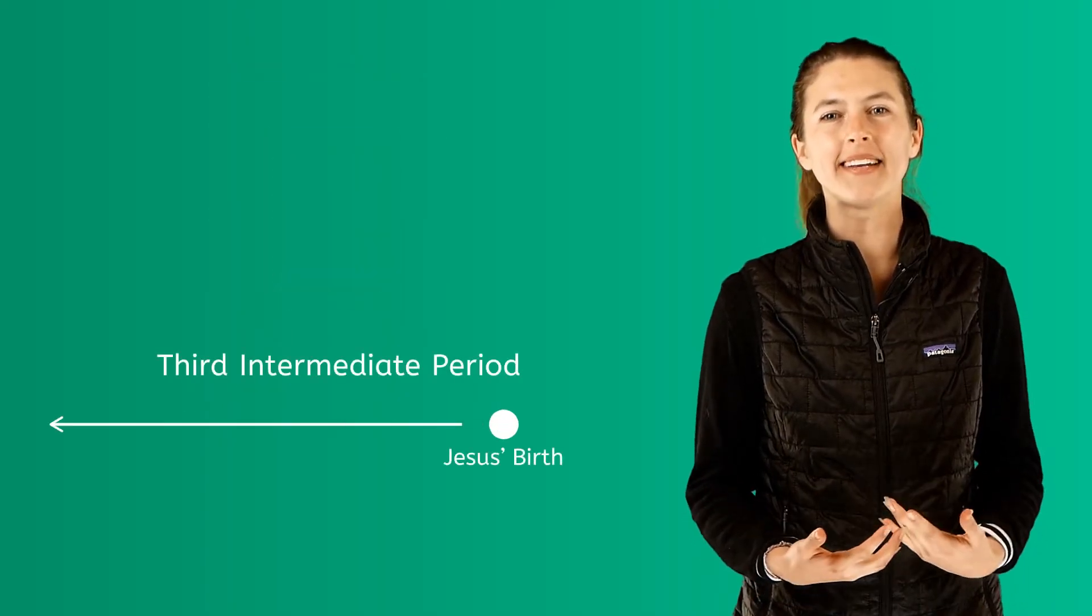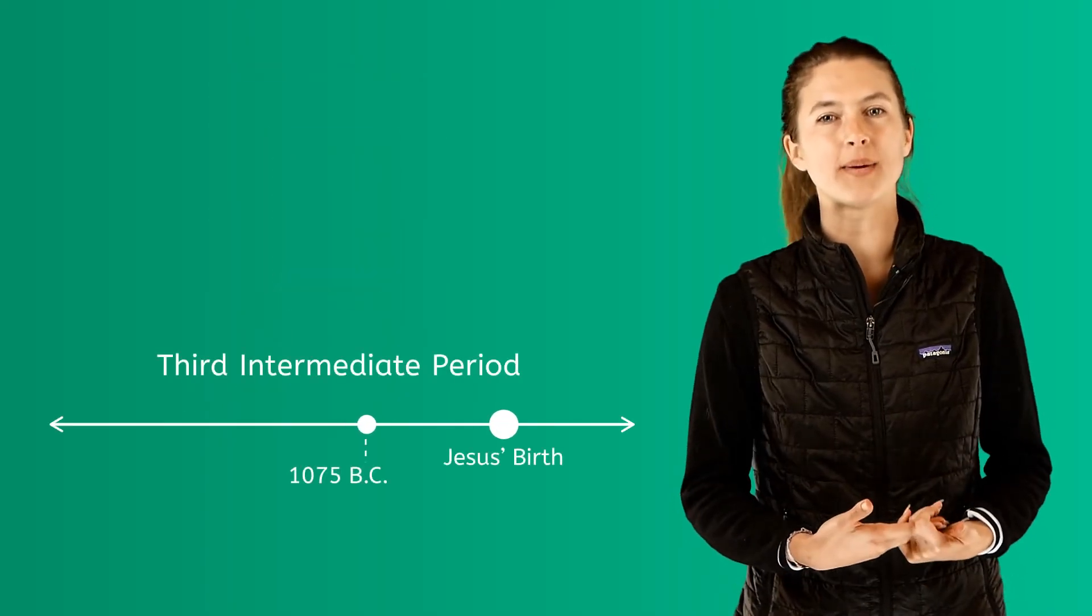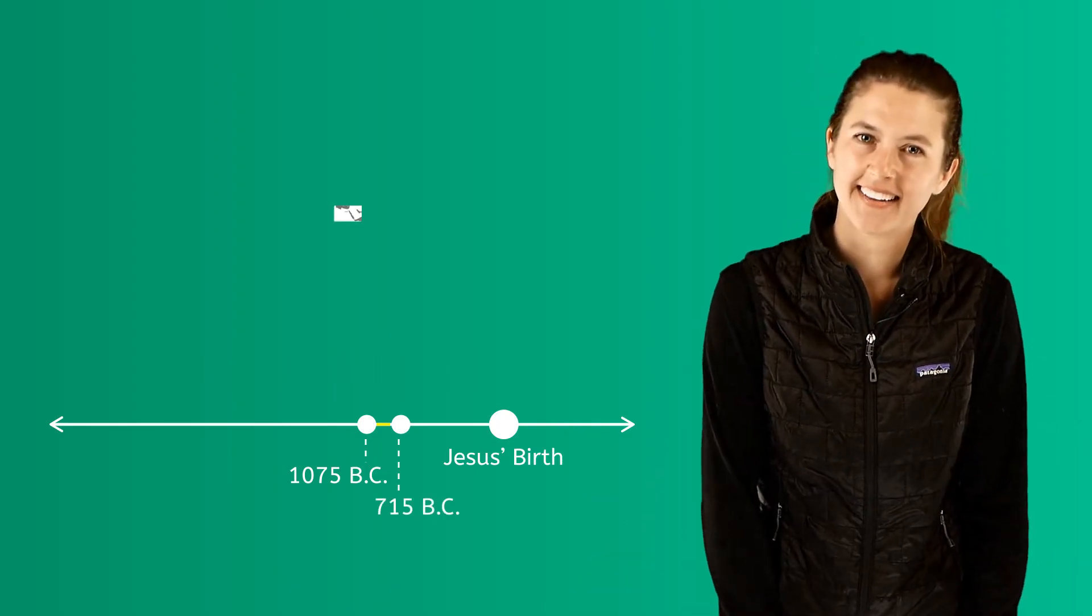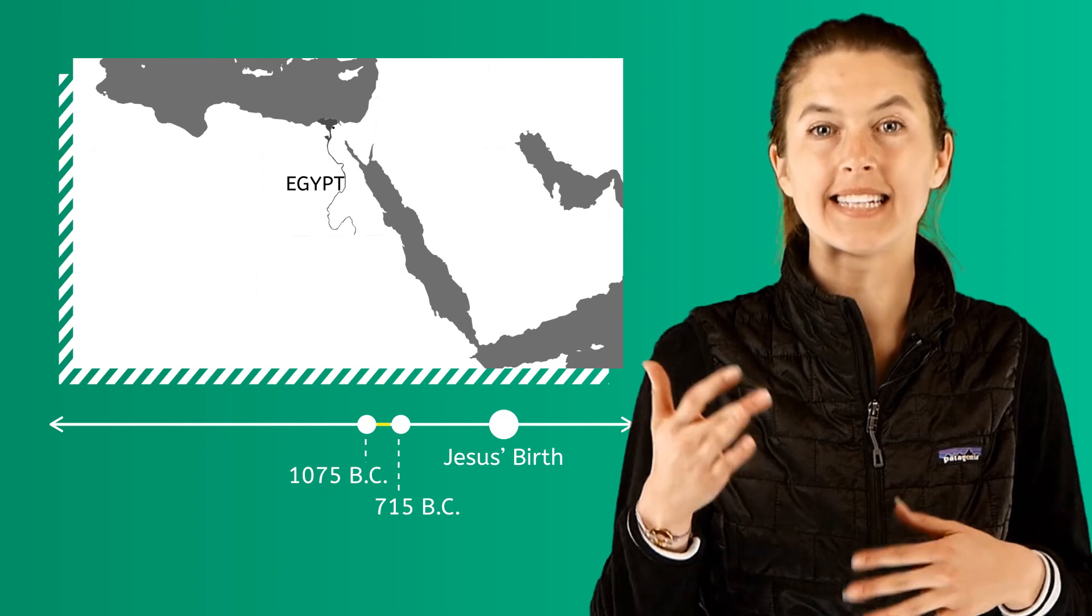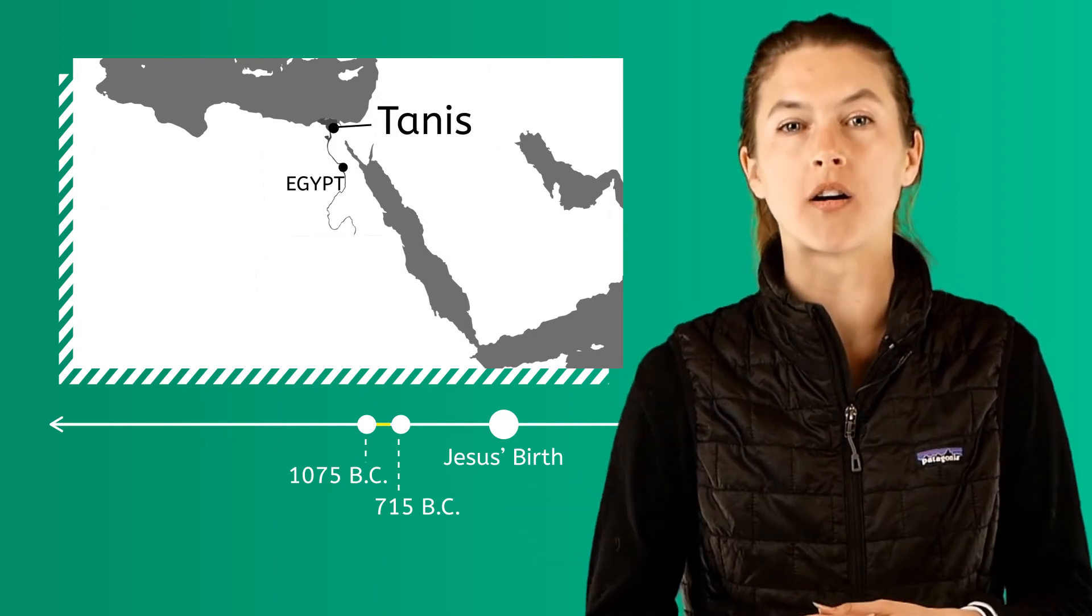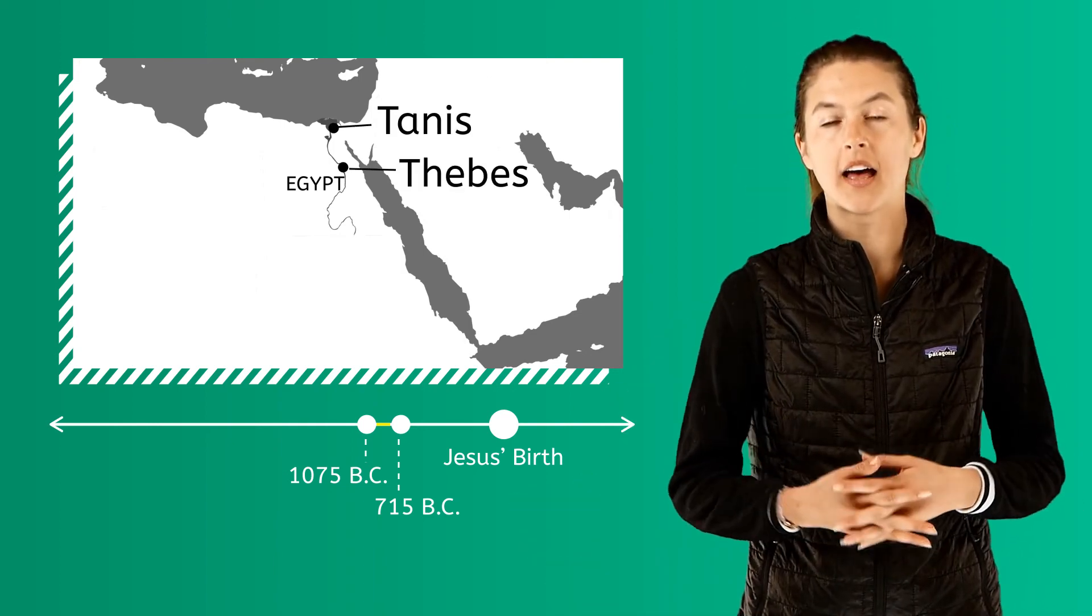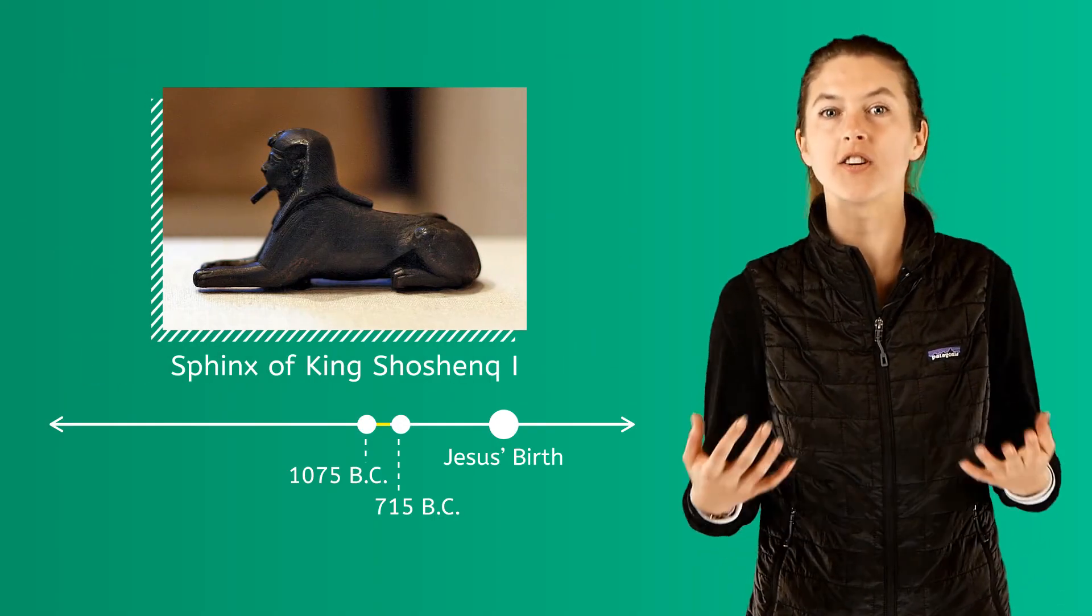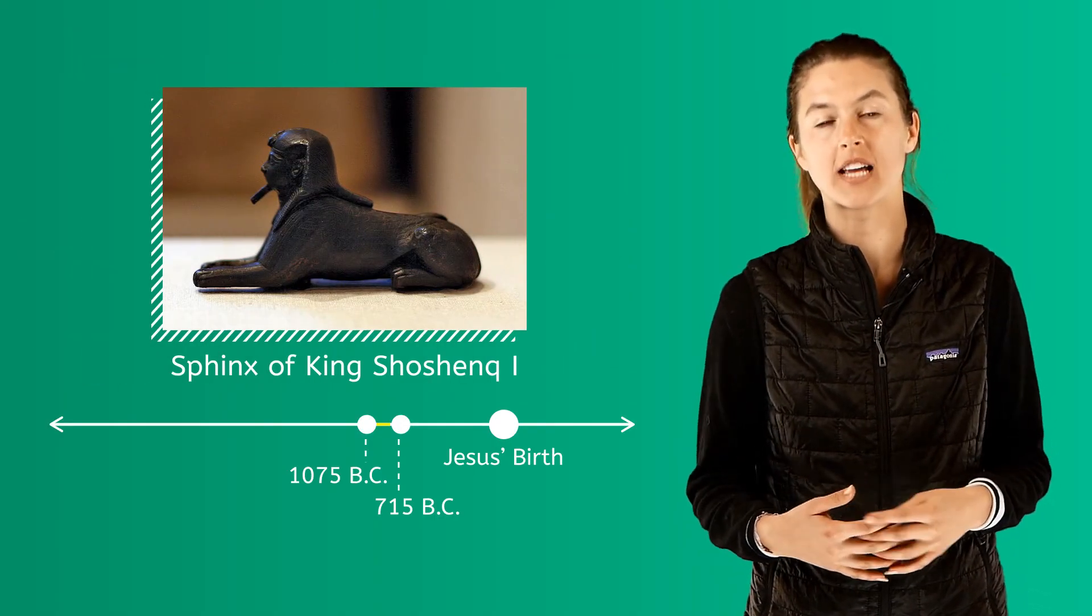Third Intermediate Period from 1075 BC to 715 BC has Egypt once again being divided. A northern capital city, Tanis, was formed along with the southern capital city of Thebes. A pharaoh named Shoshenq the First reunited the country after the time of the division.